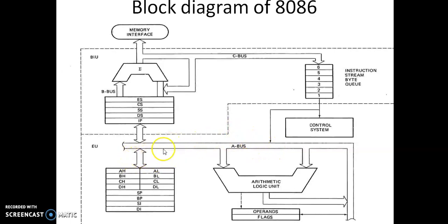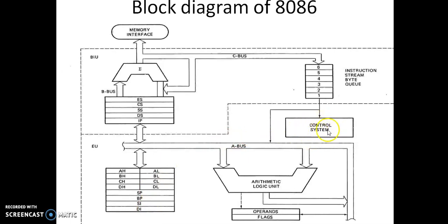Coming to the execution unit, the main function of the execution unit is decoding the instruction and executing that instruction. The main components of the execution unit are the control system with an instruction decoder inside, the arithmetic and logic unit, the flag register, and the general purpose registers, pointer registers, and index registers. The instruction decoder translates the instructions into a series of actions carried out by the execution unit, and the control system generates the control signals used for internal operation of the microprocessor.